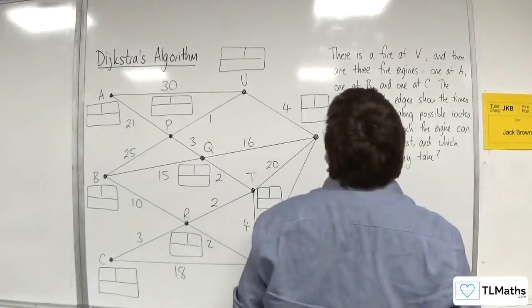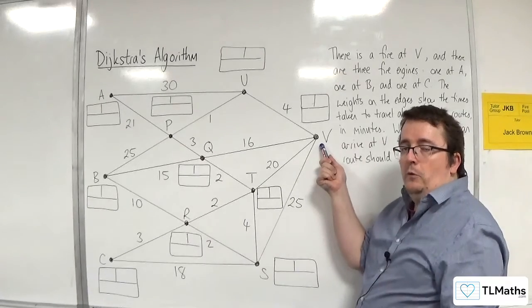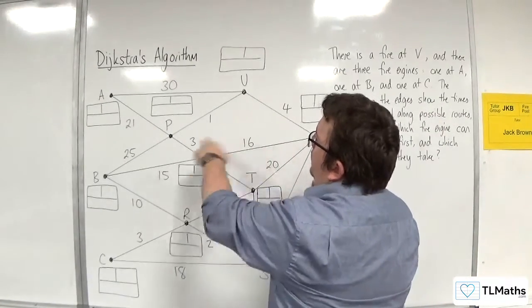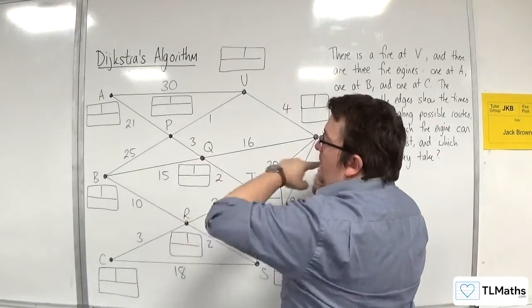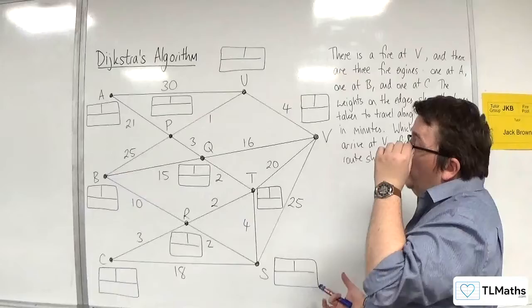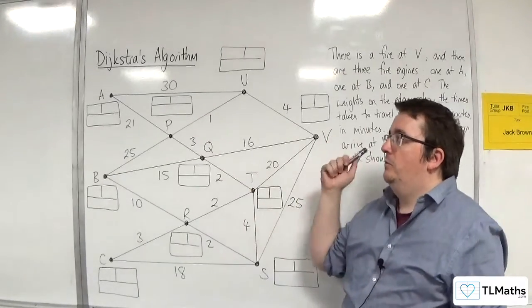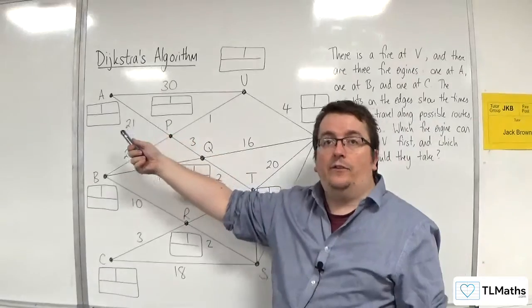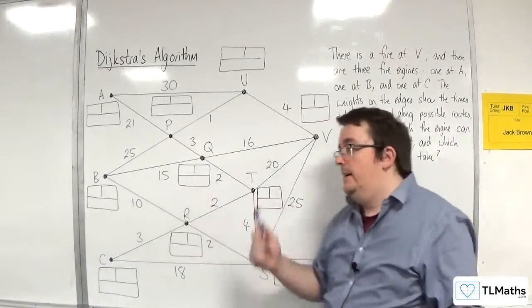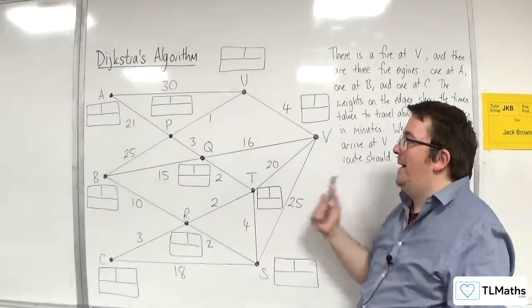However, if you start at V, then if you do Dijkstra's from that point, that will tell you the shortest distance from V to U, V to Q, V to P, V to A, V to B, and V to C, all in one go. So actually, we should do Dijkstra's from V, and that will find me the shortest distance from V to A, and hence shortest distance from A to V, the shortest distance from V to B and hence from B to V, and the shortest distance from V to C and hence C to V.